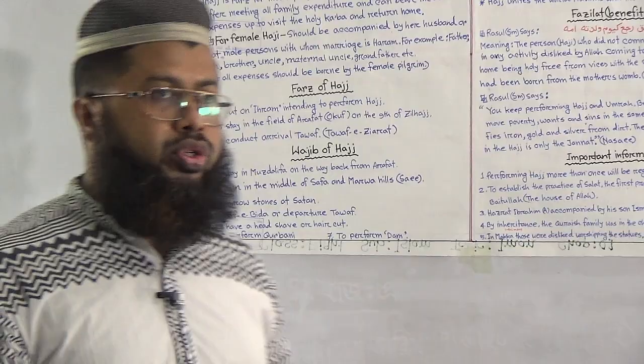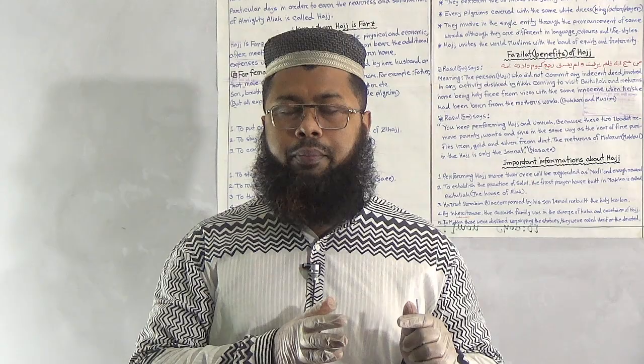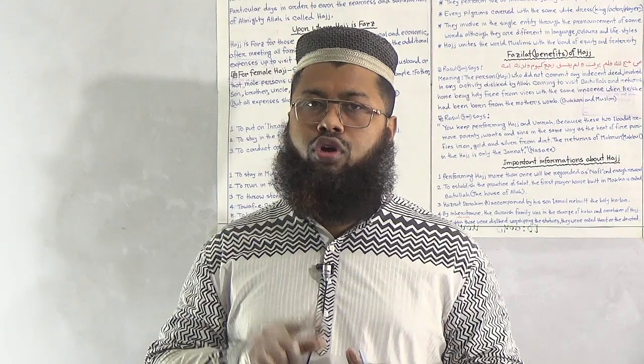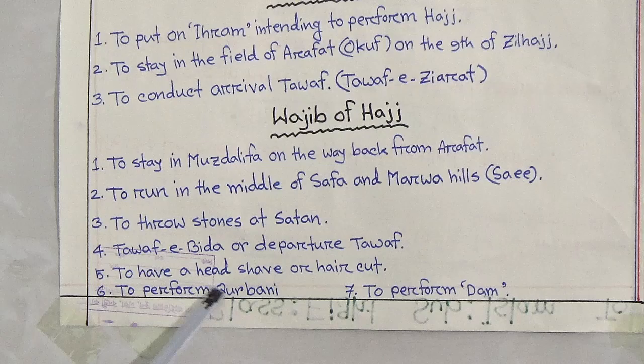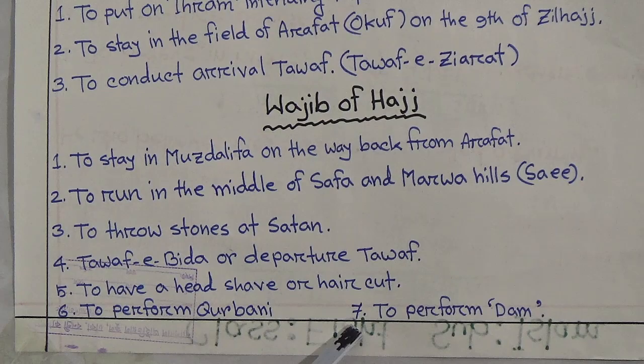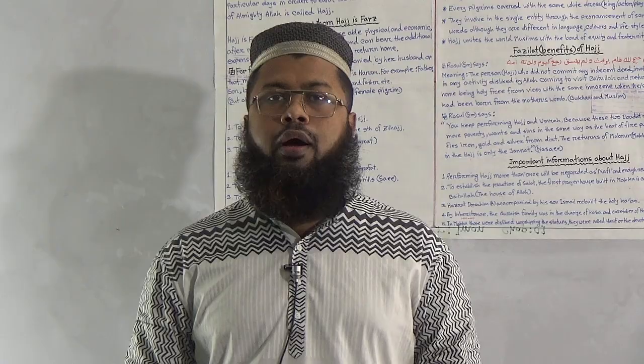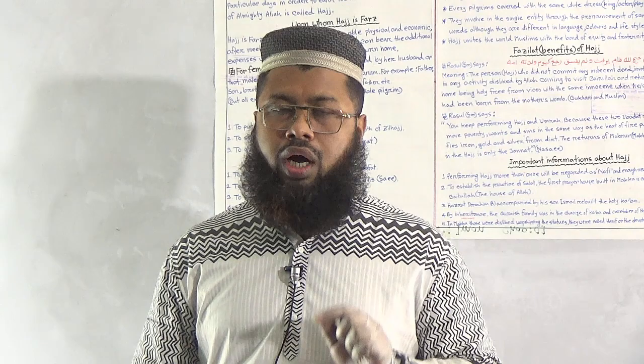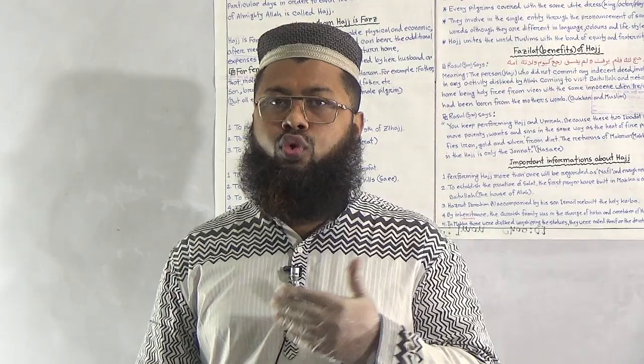Number five is to have a head shave or haircut. Number six is to perform Qurbani. Last is to perform Dam. Dam is a penalty — if you break or omit any of the wajib acts of Hajj, you have to perform Dam by sacrificing animals. This animal sacrifice as a penalty is called Dam.